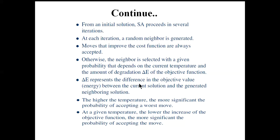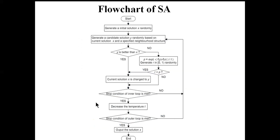Here ΔE represents the difference between the current objective value and the neighborhood value. At high temperature the probability of accepting a worse solution is high, while as temperature gradually falls, accepting a worse solution becomes less likely. At a given temperature, the lower the increase of the objective function, the more significant the probability of accepting the move.